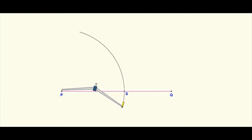Without changing the radius of your compass, move your compass point from point P and place it at point S, then draw an arc intersecting the arc you just drew.